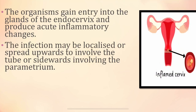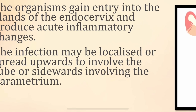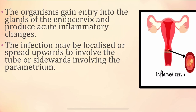The organisms mentioned above gain entry into the glands of the endocervix, infecting them first and then producing inflammatory changes. The infection can be localized to the cervix or endocervix, or it can move upwards into the fallopian tubes, or spread sideways into the parametrium.